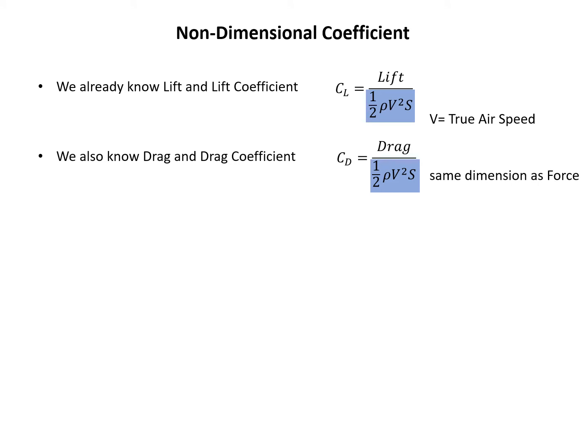The first two coefficients we are looking at are the lift coefficient and drag coefficient. I want to draw your attention to the denominator: half rho v squared times S. If we multiply the dimensions of rho, v squared, and S together, we should find this has the same dimension as force.